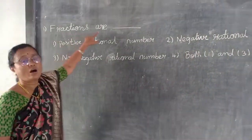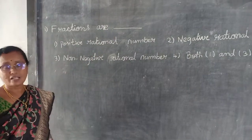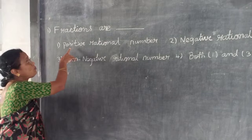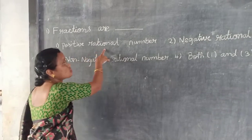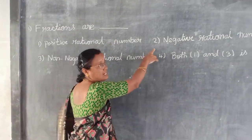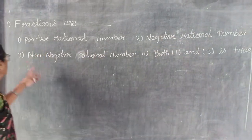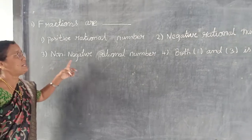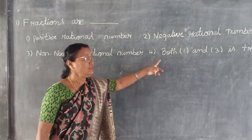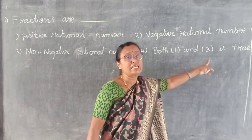Fractions are classified as which type of number? The options are: first, positive rational number; second, negative rational number; third, non-negative rational number; fourth, both 1 and 3 are true.